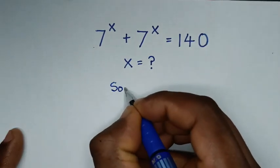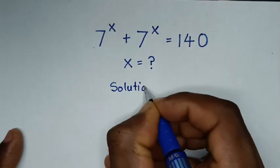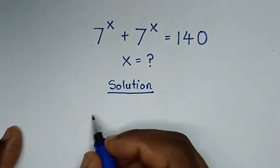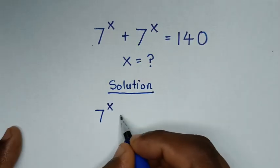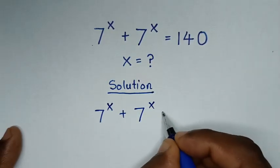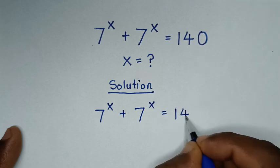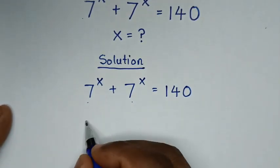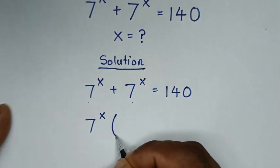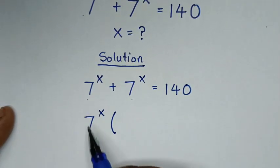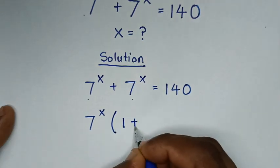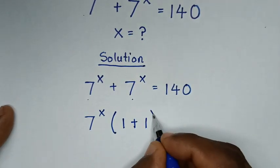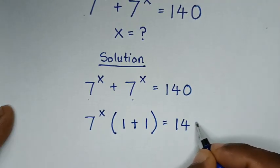Solution. From our problem, which is 7 power of x plus 7 power of x is equal to 140. Here, 7 power of x is common, so we'll take 7 power of x out of the bracket. Then, 7 power of x divided by 7 power of x is 1, plus 7 power of x divided by 7 power of x is 1, in bracket, is equal to 140.